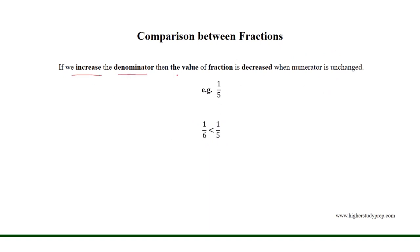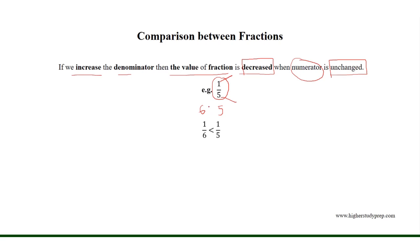If we increase the denominator, then the value of the fraction is decreased while the numerator is unchanged. For example, if we consider the fraction 1 over 5, where 1 is the numerator and 5 is the denominator, and we increase the denominator from 5 to 6 — where 6 is greater than 5 — therefore the fraction 1 over 6 is less than 1 over 5. Thus the value of the fraction is decreased when we increase the denominator.